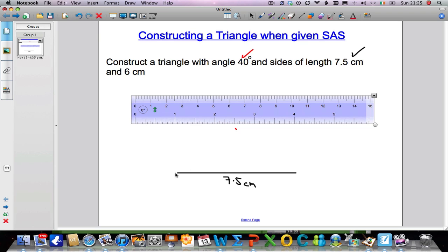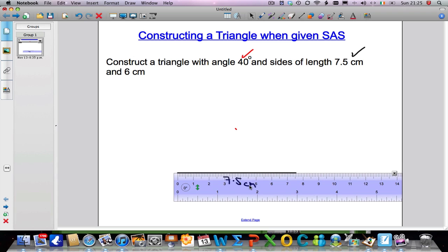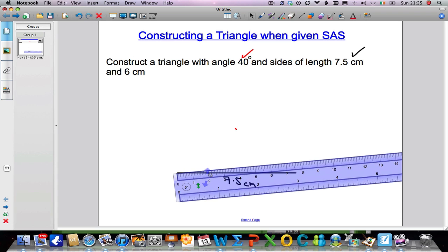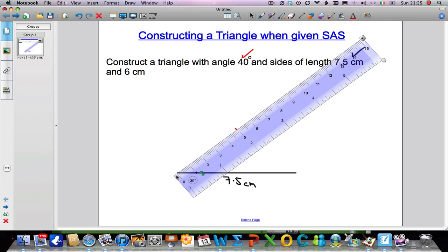Now I need to draw the line that goes from here through this point. It needs to be 6 cm in length. Take my ruler, line it up, and I'm going to swing it around. I want to swing it around so that it's lined up directly with this mark that we've made earlier. And then what I do is I make sure that I draw a line from here, and it's going to be 6 cm long.